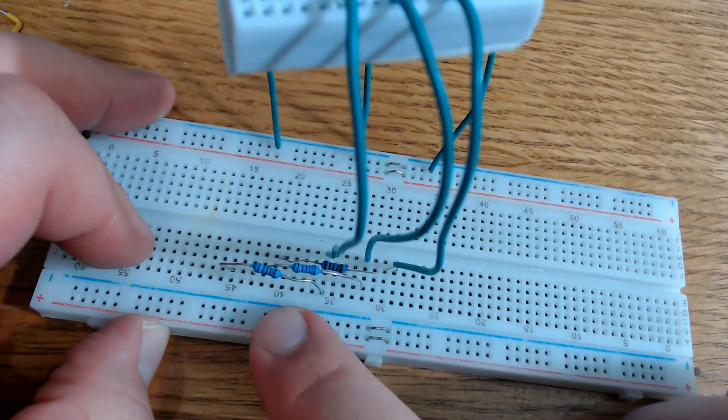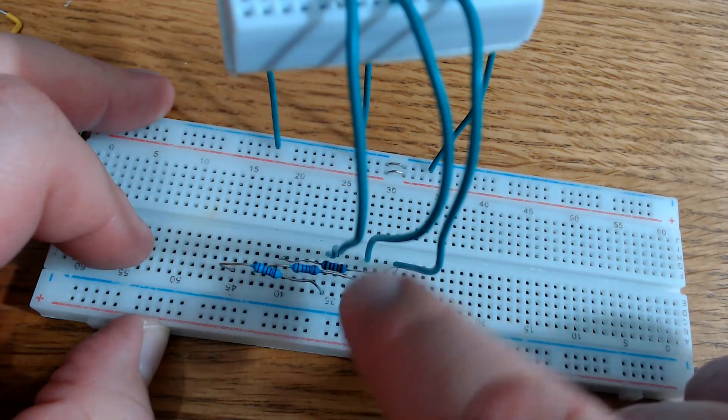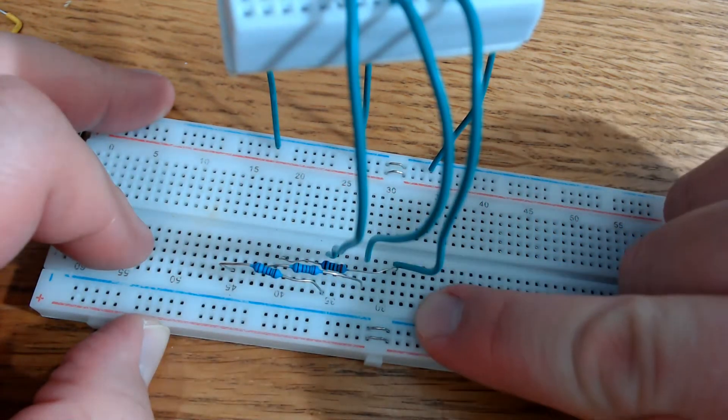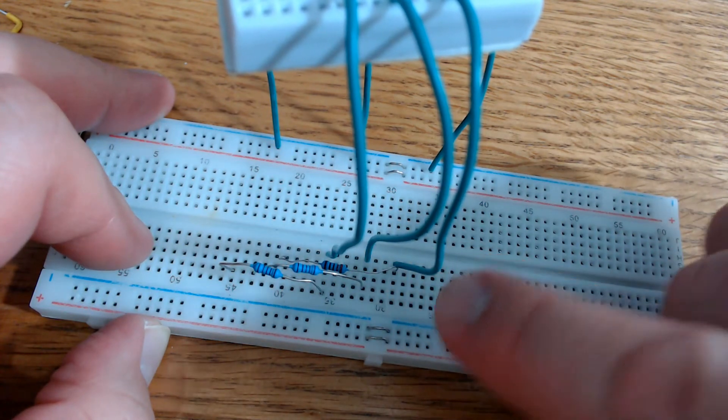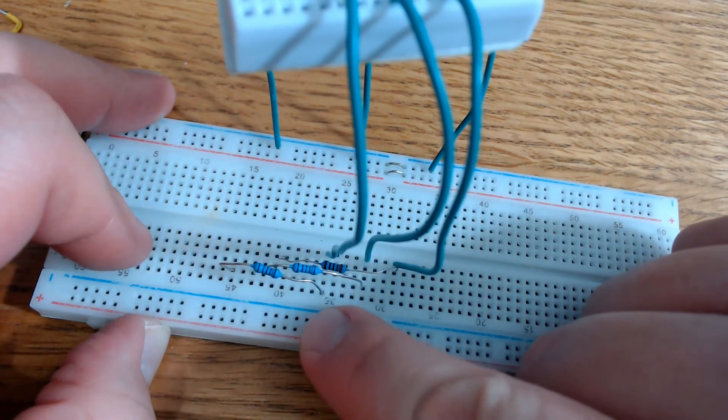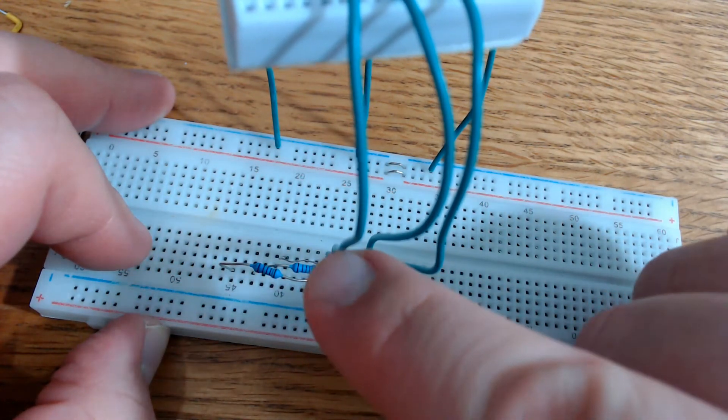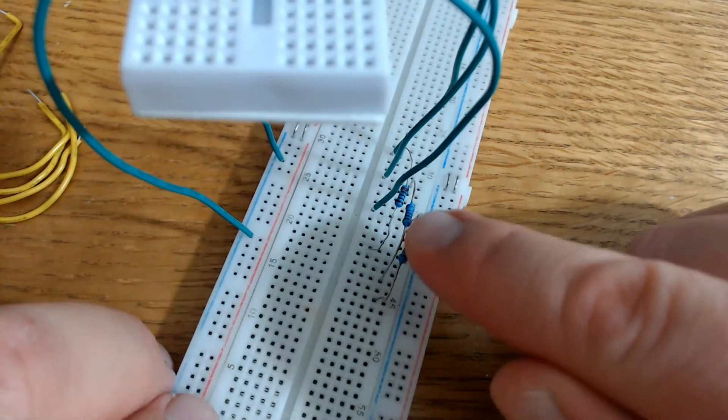The next thing I did was I connected a 220 ohm resistor to the wires coming down from the top. And because these rows are connected, the 220 ohm resistor is connected to this wire. And the same with this one is connected to this wire. And this one right here is connected to the wire on the left. And you don't want your resistors to touch each other.